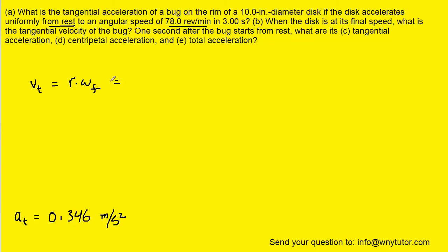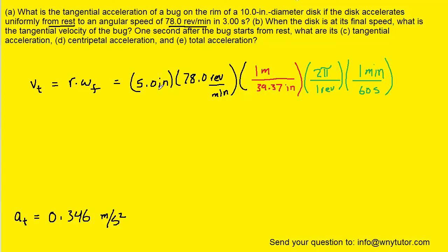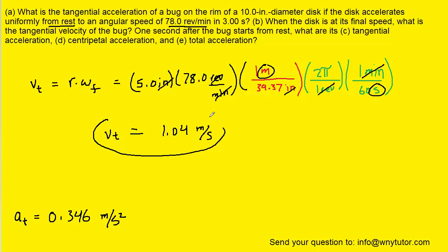Once again, the radius is 5 inches, which we will convert to meters. The final angular velocity was 78 revolutions per minute, and we set up the same conversion to change that into meters per second, canceling the inches, revolutions, and minutes. When we compute that, we get approximately 1.04 meters per second for the final tangential velocity. This is the answer to Part B.